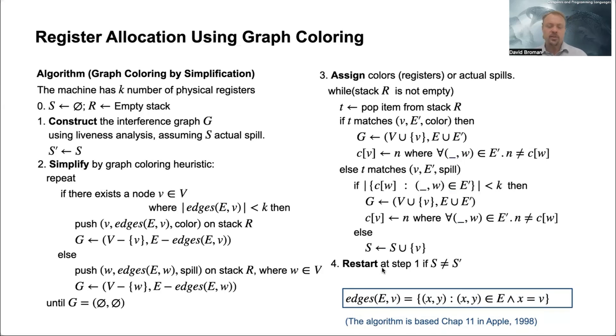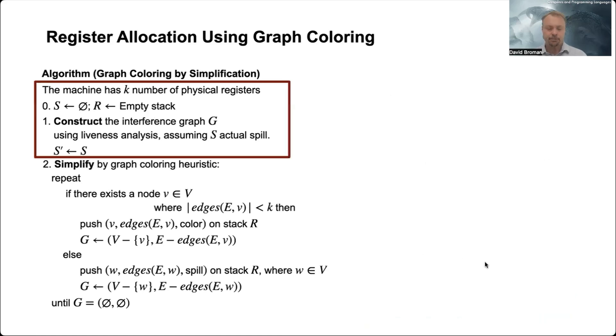And then in the end, the fourth step, we check if we can end this. So we are iterating until we see that the spilling here is equal to what it was in the previous step. So basically, we're iterating to reach this fixed point on spilling.